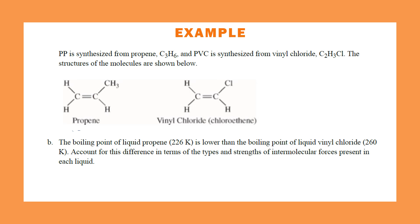Both molecules exhibit dispersion forces. They also both show dipole-dipole interactions because both are polar. Vinyl chloride has a larger dipole moment due to chlorine's high electronegativity, which draws electrons closer, creating a more uneven spread of electron density. Because it's more polar, it forms stronger dipole-dipole interactions than propene, resulting in a higher boiling point.